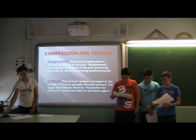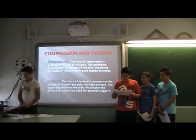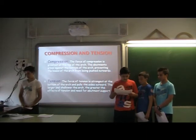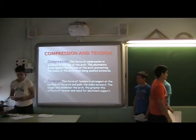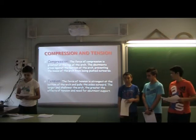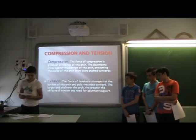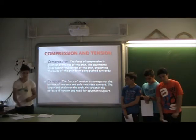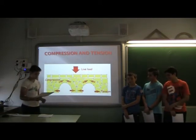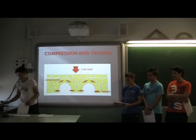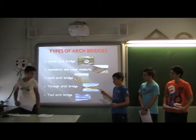Compression and tension in arch bridges. Compression: the force of compression is tested at the top of the arch. The elements press against the bottom of the arch, preventing the base from being pushed upwards. Tension: the force of tension is tested at the bottom of the arch and along the sides. The abutments absorb the arch forces, reducing the effects of tension for optimal support. This is an example of the compression and tension of arch bridges.